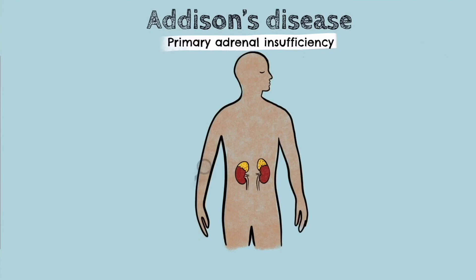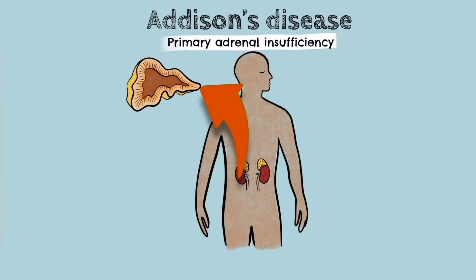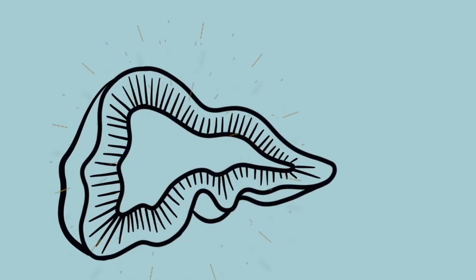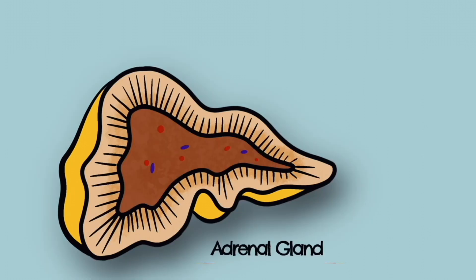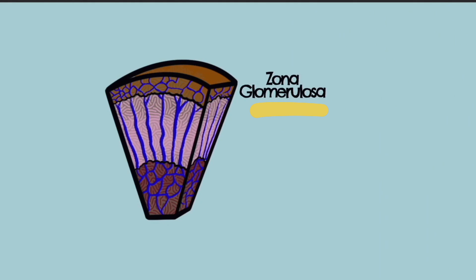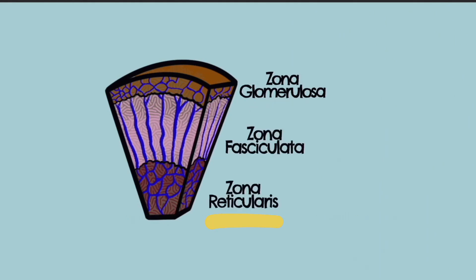Before we look at these symptoms, let's first look at the functional anatomy of the adrenal glands. Here is a closer look at an adrenal gland. Your adrenal glands are also known as your suprarenal glands due to their position just above your kidneys. These are endocrine glands that produce a variety of hormones including adrenaline, aldosterone and cortisol. Each gland has an outer cortex and an inner medulla. The cortex is made up of three layers: the zona glomerulosa, the zona fasciculata and the zona reticularis.